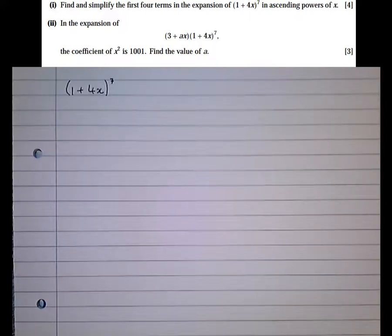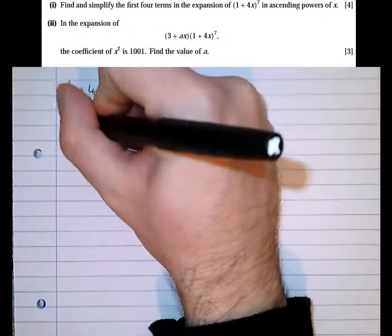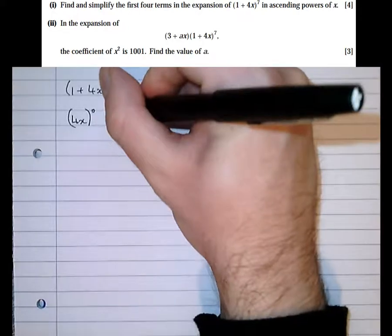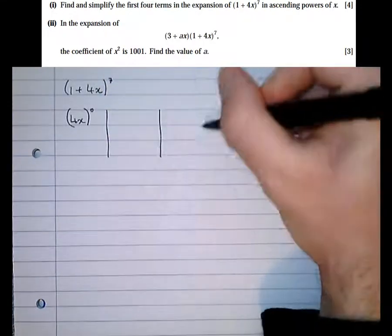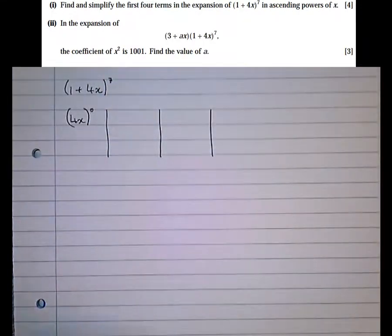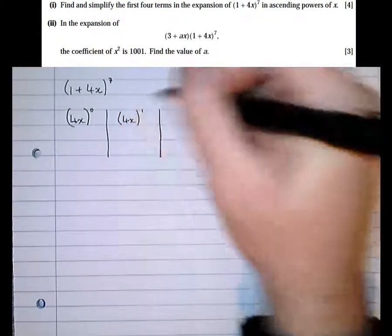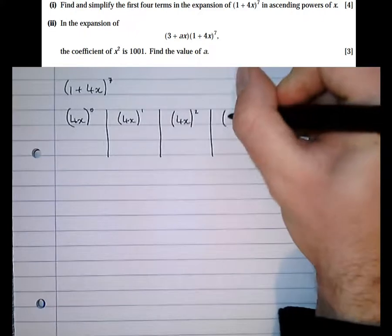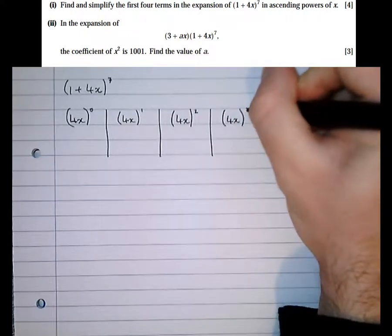The first thing we need to do is find the lowest power of x. Well, the lowest power of x is 4x to the power of 0. As we saw in the previous video, I prefer to do this in columns. So then we've got 4x to the power of 1, 4x squared, and 4x cubed.